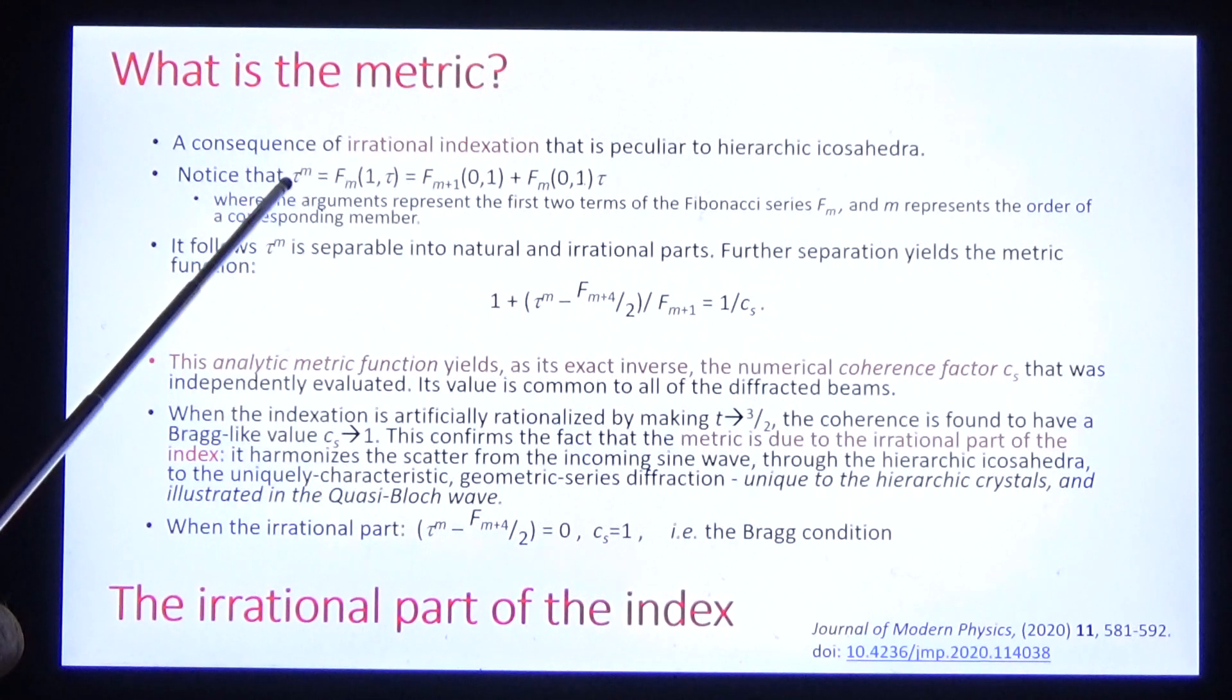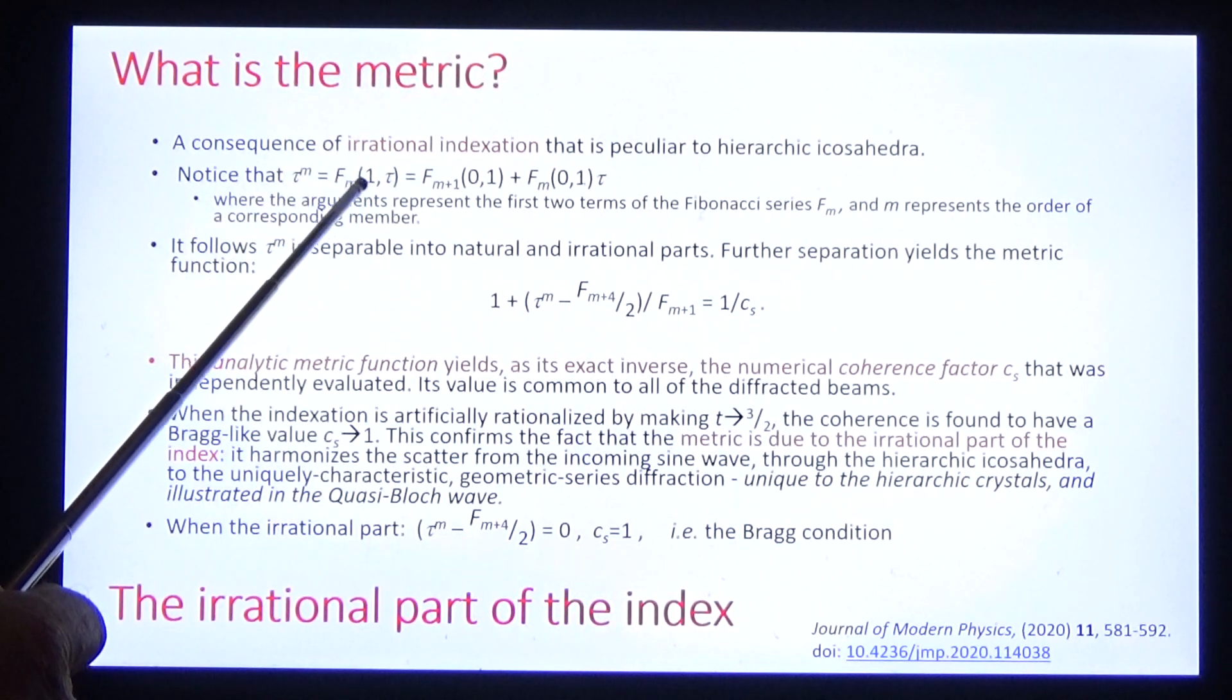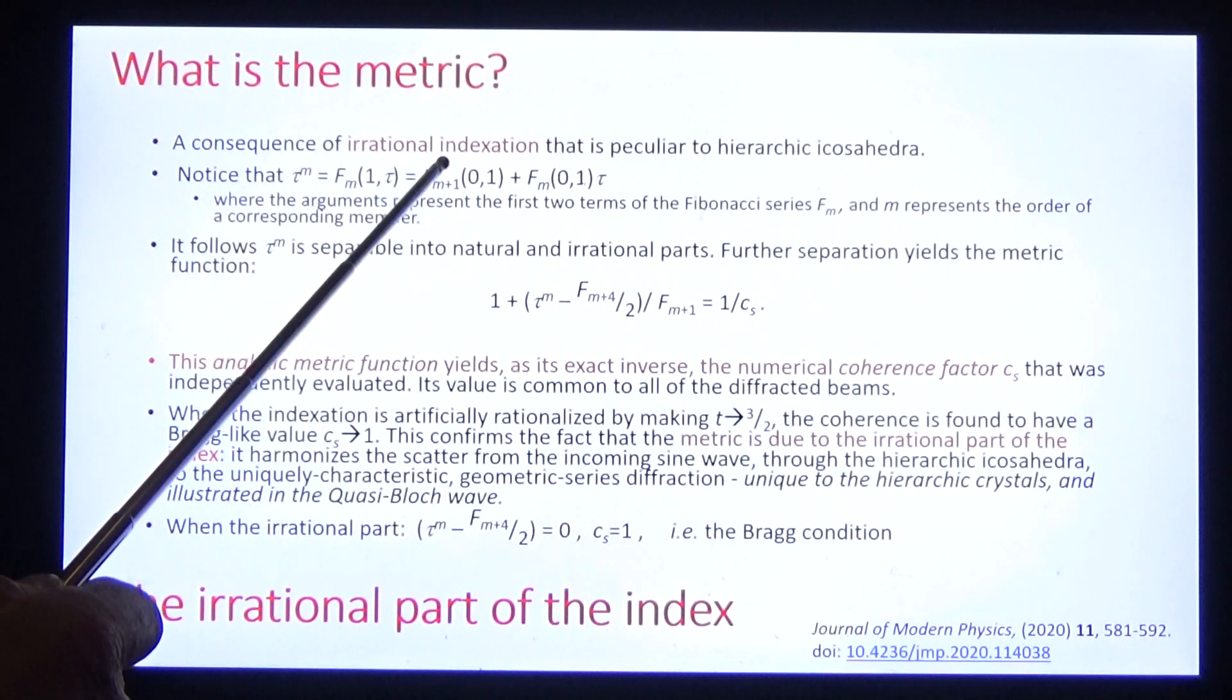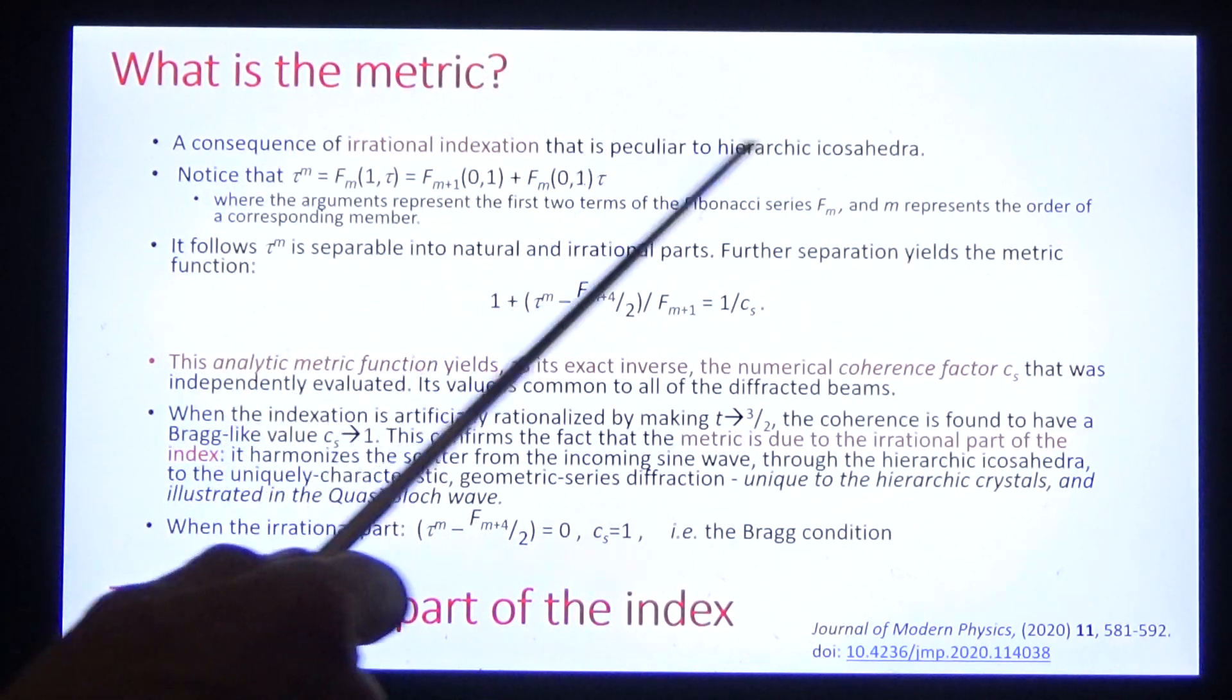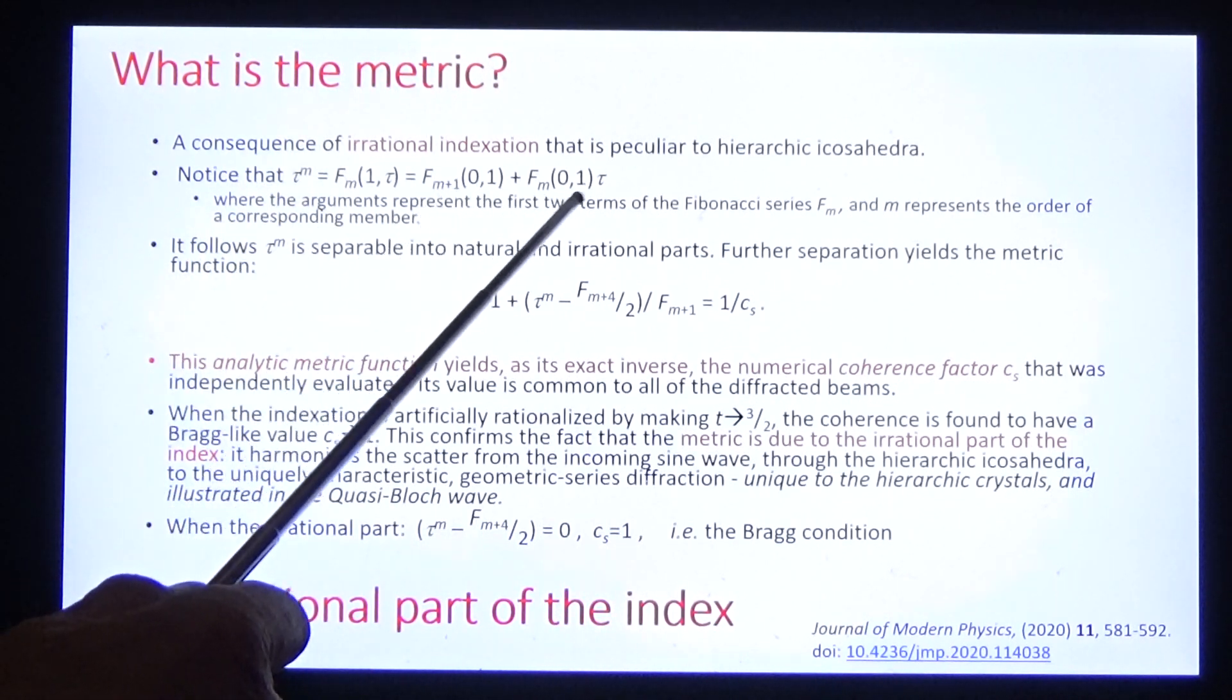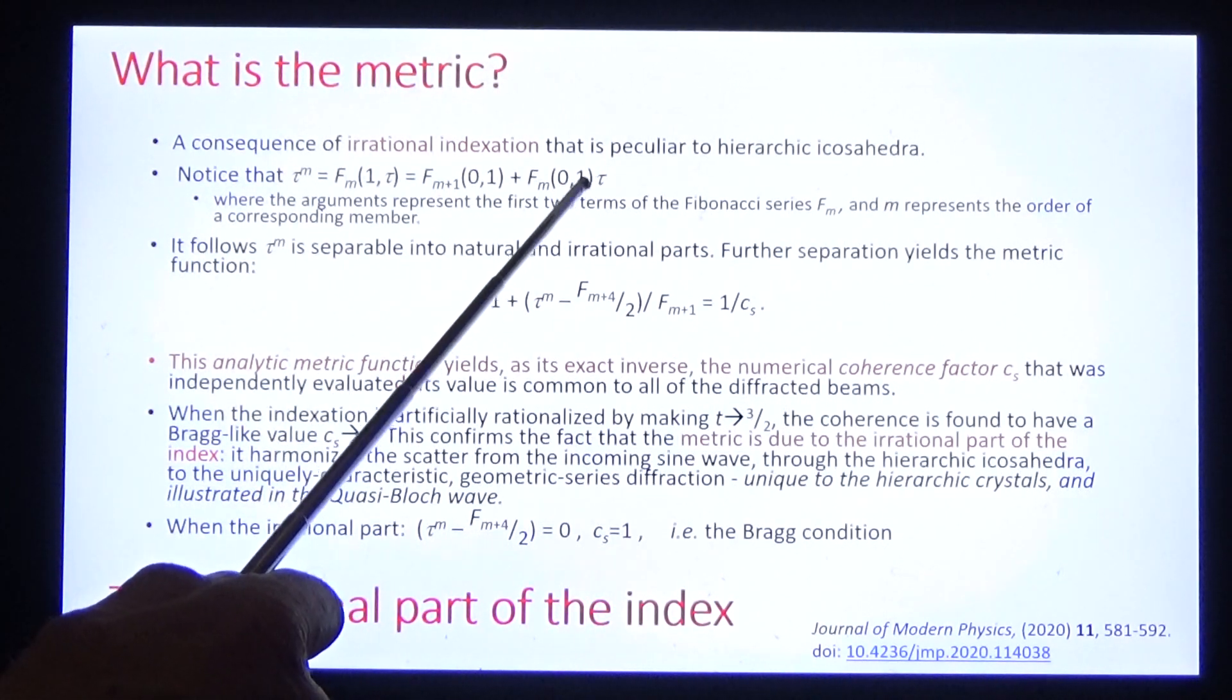Geometric tau to the M can be written as the Fibonacci sequence. 1, tau, 1 plus tau, 1 plus 2 tau, 2 plus 3 tau, etc. And it can also be written as the sum of two Fibonacci sequences, one of them natural and one of them irrational.